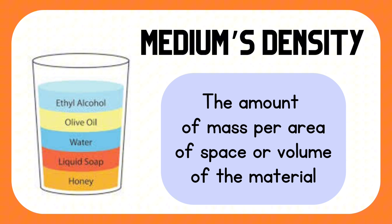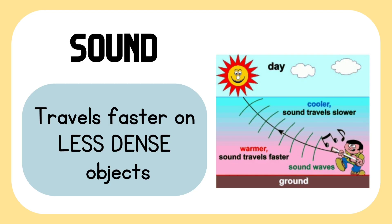As you can observe, oil will just float on top of the water because oil is less dense than water. Ethyl alcohol is the least dense among the substances shown in the diagram. Going back to our topic, sound waves travel faster on less dense objects.